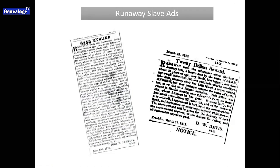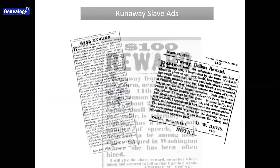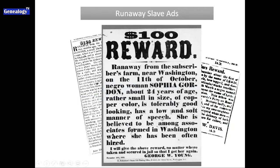Runaway slave ads, which can be found in many of the newspapers now available to us, give a plethora of information about formerly enslaved people. They tend to describe them down to the nubs of their knuckles, any markings on their bodies, their height, their weight, their skin color, what kind of hair they have, and often some things about their personality. You can see here, this person has 'a low and soft manner of speech.' If you know that this was your ancestor — the owner's name is always on here also — you would at least be able to get a mental picture of what that ancestor looks like.